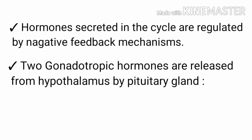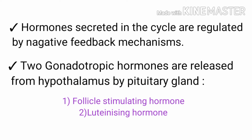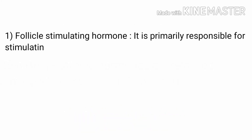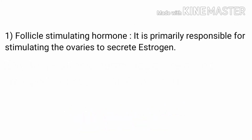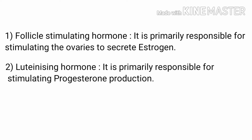Two gonadotropic hormones are released from the hypothalamus by the pituitary glands. The first one is follicle-stimulating hormone and the second one is luteinizing hormone. Follicle-stimulating hormone is primarily responsible for stimulating the ovaries to secrete estrogen. Luteinizing hormone is primarily responsible for stimulating progesterone production.